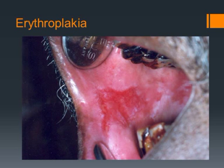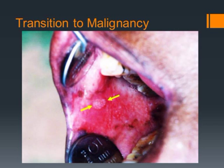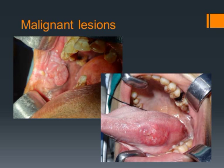Erythroplakia is a fiery red patch that cannot be characterized either clinically or pathologically as any other definable lesion. It has the highest risk of malignant transformation compared to all other mucosal lesions, at up to 51%. More than 40% of these lesions harbor in-situ cancer. This is nodular leukoplakia with malignant transformation — note the nodular leukoplakia in the periphery with erythroplakia in between and a central granular area. Histopathological examination of the granular area was suggestive of well-differentiated squamous cell carcinoma. You can also come across frankly malignant lesions, like this lesion on the right buccal mucosa and this one on the left margin of the tongue.